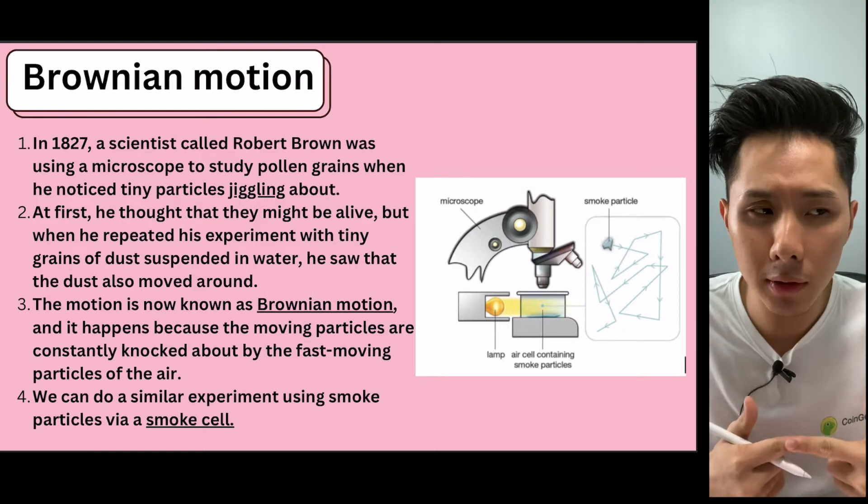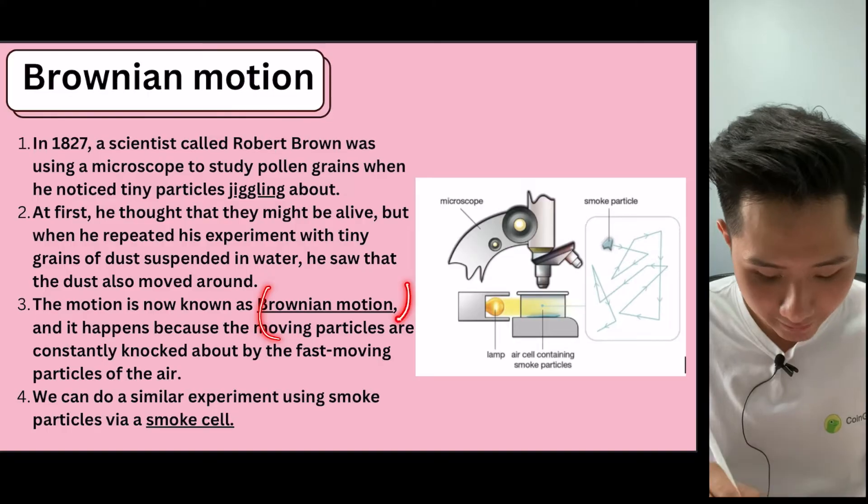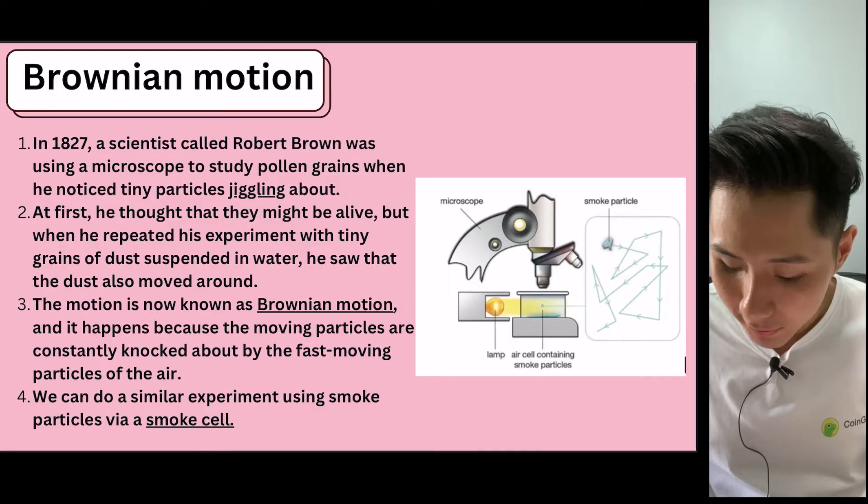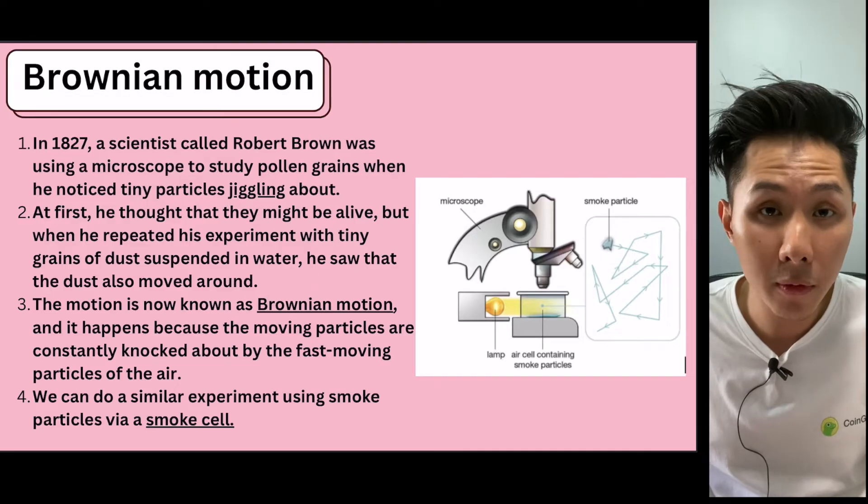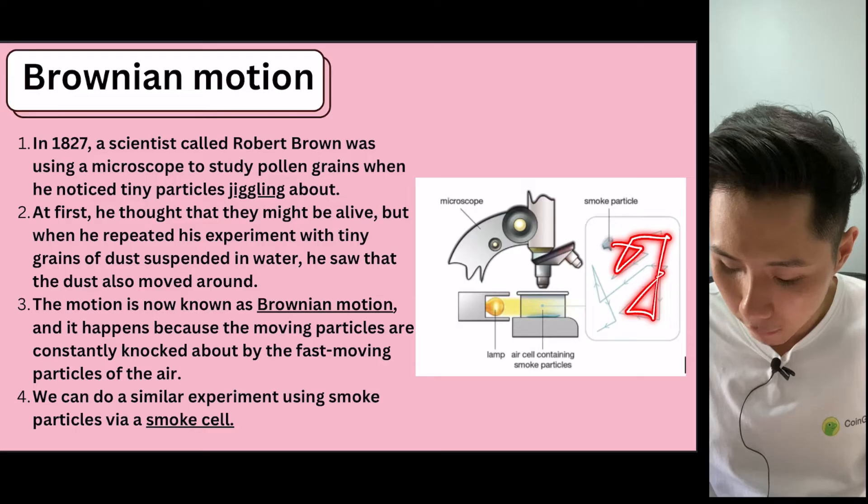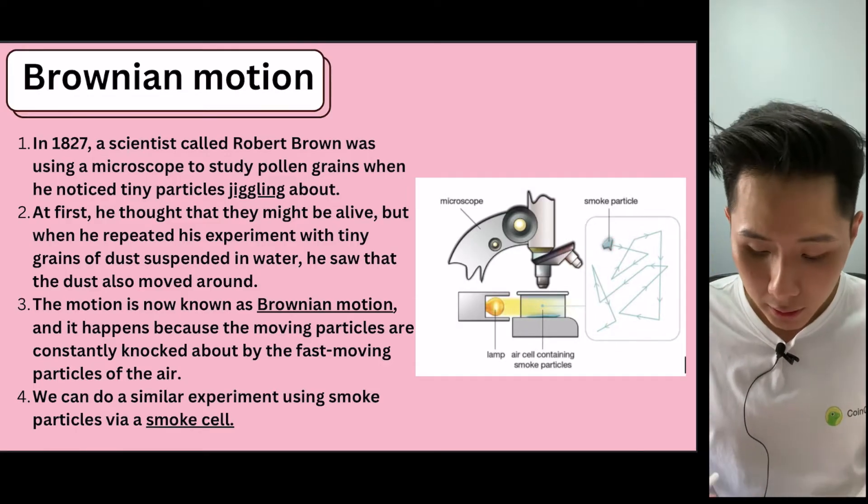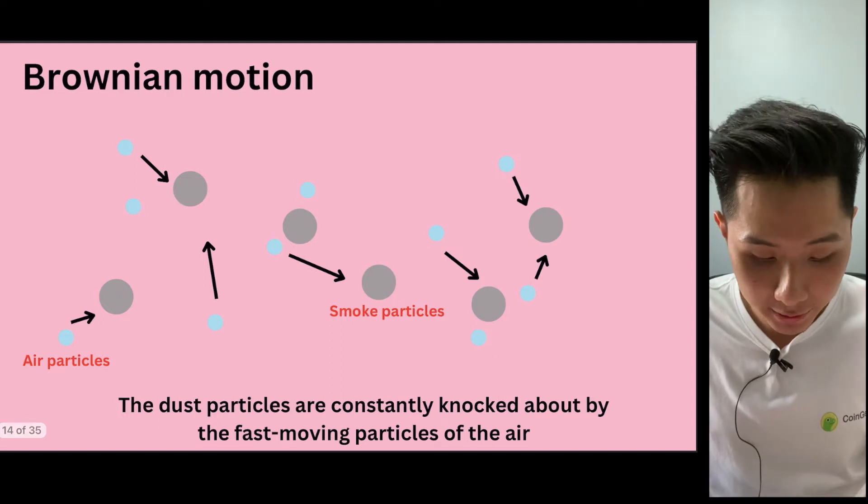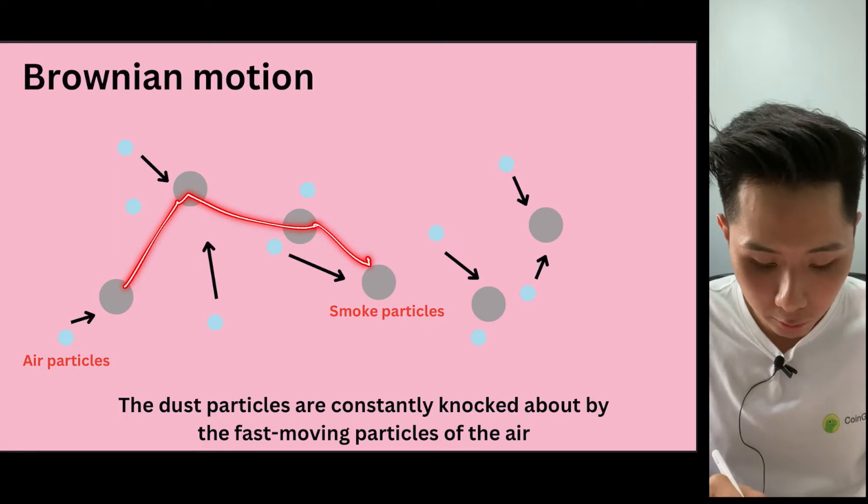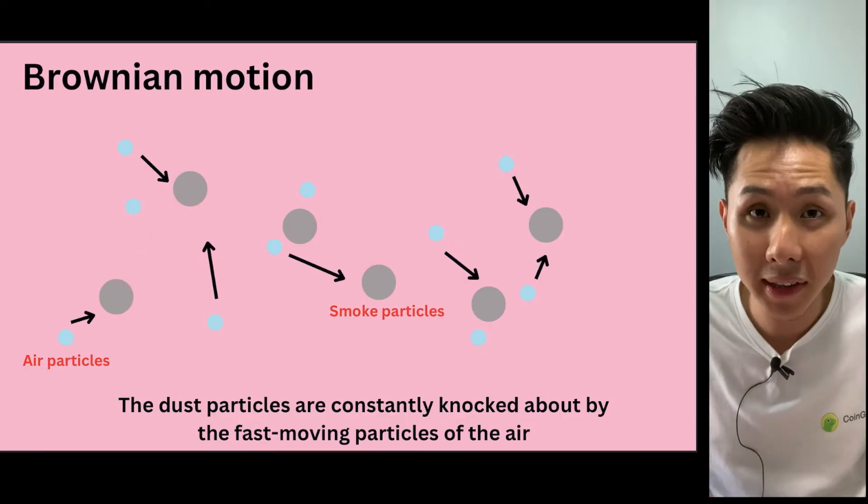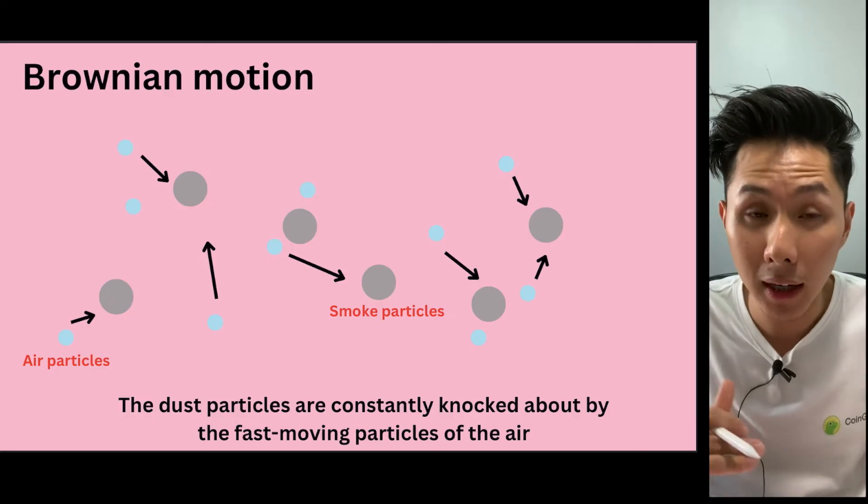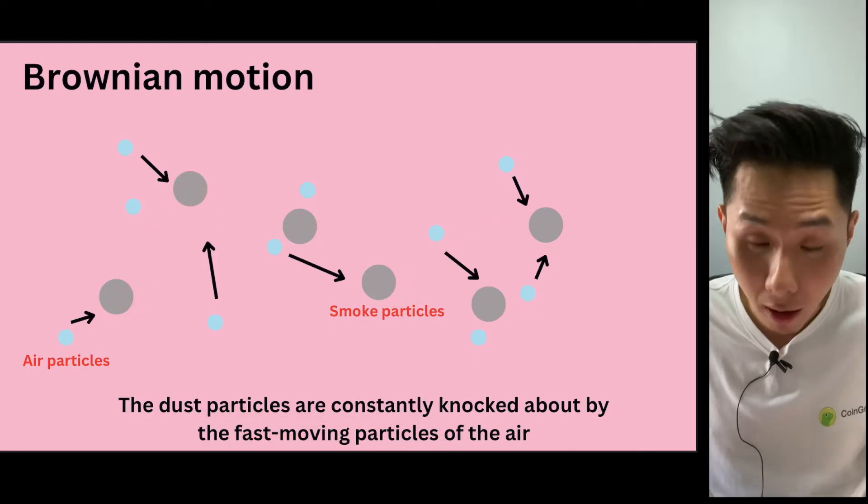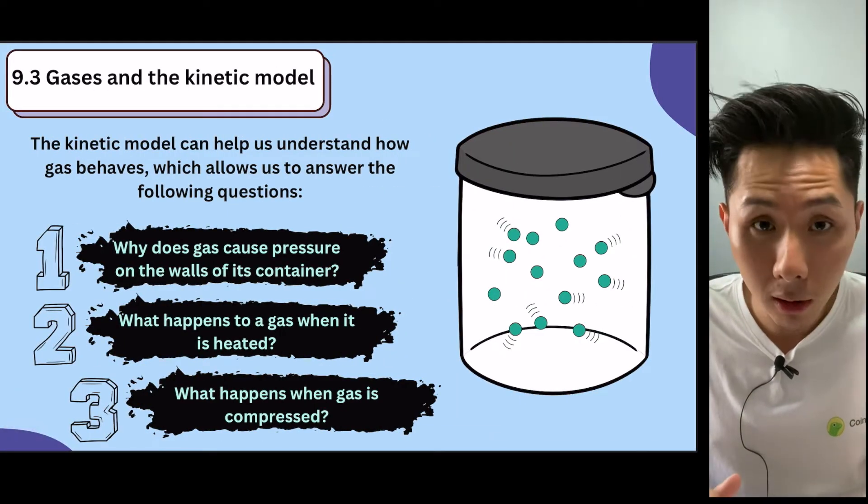But as he investigated tiny grains of dust, which is a non-living thing, he also observed that the dust moved around. And this led him to discover, why is it that these particles are moving? And then he discovered something called Brownian motion, which means particles are constantly being struck by air particles. And when they're being hit, they seem to travel in a relatively random order. So you can investigate how the smoke particles move by doing this experiment. The smoke particles will just keep moving around, even though you can't really see what is moving around, because it is the air particles that cause the movement of this Brownian motion. So the dust particles are constantly knocked about by the fast moving particles of the air.